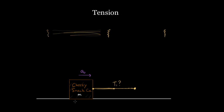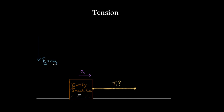So let's solve for the required tension to pull this box with acceleration a-zero. To do these problems, we draw a force diagram the way you draw any force diagram — you draw all the forces on the object. We have the force of gravity equal to mg pointing down, a normal force from the floor pointing up since the box is in contact with the floor, and then this tension force T1. We'll assume a frictionless ground to keep it simple.